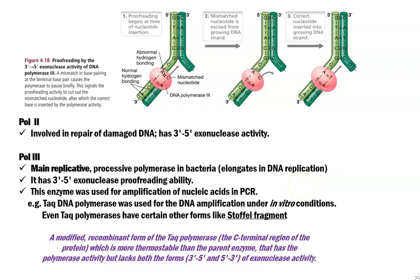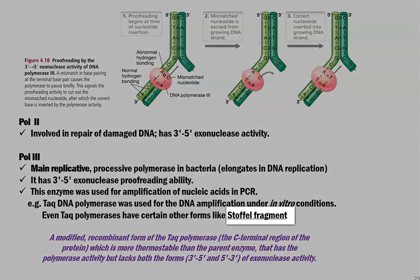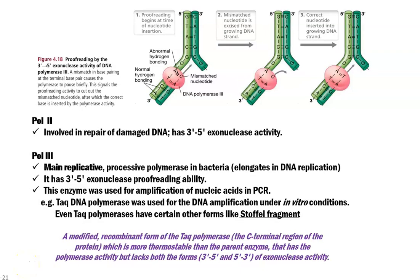Taq polymerase also has other more effective forms, such as the Stoffel fragment, which is a modified recombinant form of Taq polymerase. Its C-terminal region has been modified, making it more thermostable than the parent enzyme. It retains polymerase activity but lacks both 3'-to-5' and 5'-to-3' exonuclease activity — it possesses only polymerase activity, which gives it important applications in the field of genetic engineering.